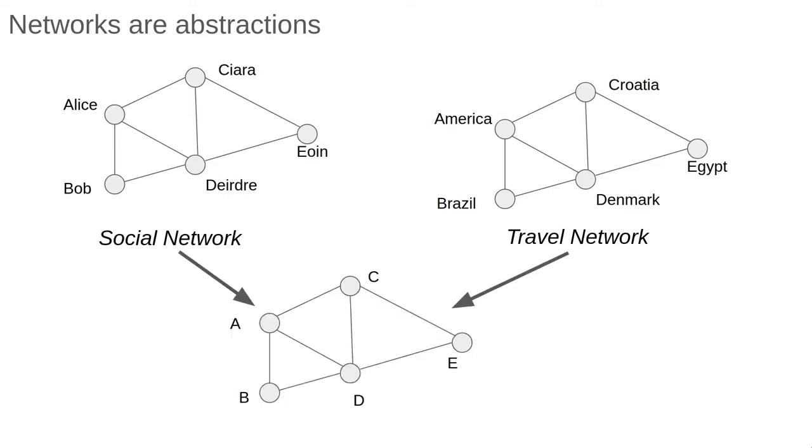Network theory abstracts away the nature of the nodes and edges. It doesn't matter if they represent countries or people or computers, and the edges can be friendships or flights or actual physical wire. From the point of view of network theory, all that matters is the number of nodes and the pattern of their connections.